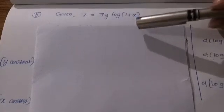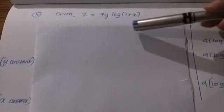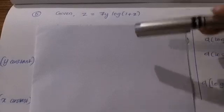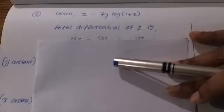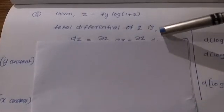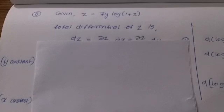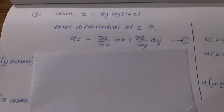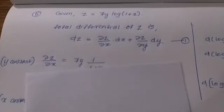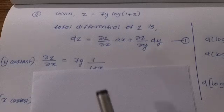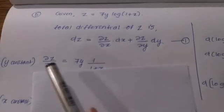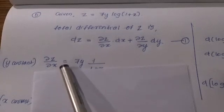Second problem: given z = 7y·log(1 + x). The total differential of z is dz = (∂z/∂x)dx + (∂z/∂y)dy. Now we find the partial derivatives. For ∂z/∂x, x is the variable and y is constant.